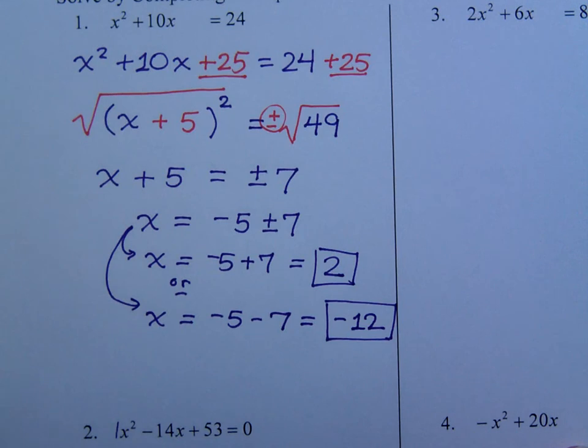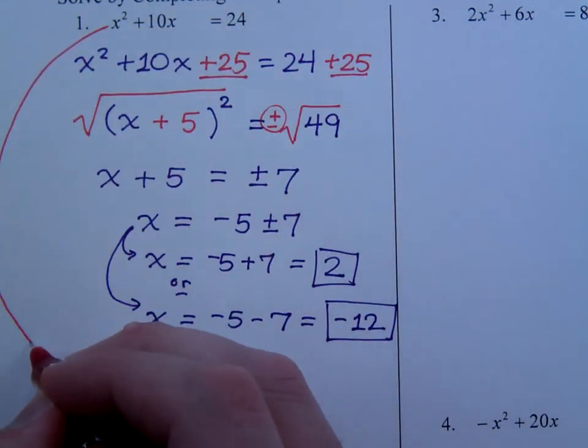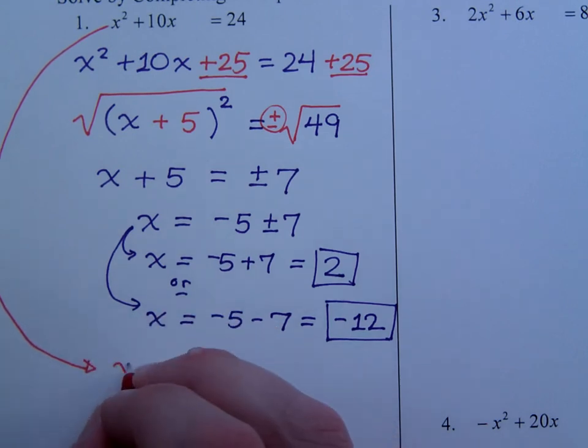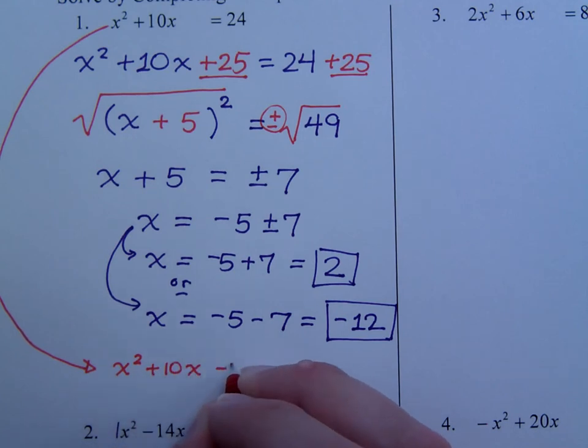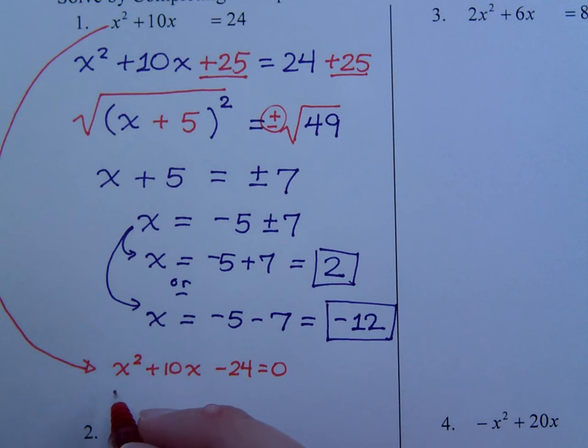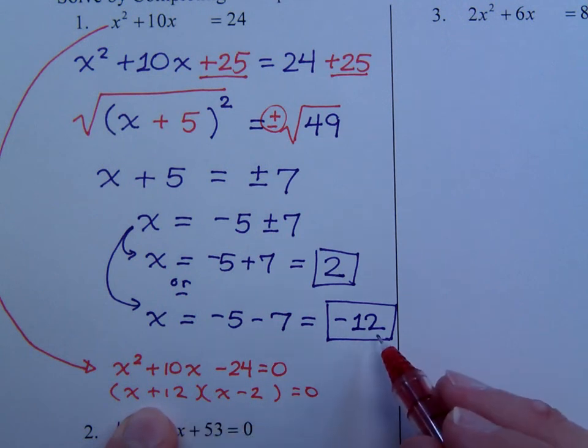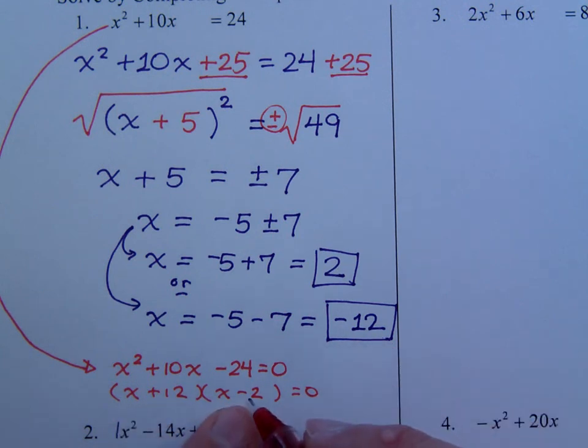if you were to use the zero factor theorem, you would have x squared plus 10x minus 24, when you set that equal to 0. And, this guy factors. He factors as x plus 12 times x minus 2. And, you see from this, you get the solution x equals negative 12. And, from here, x equals positive 2.